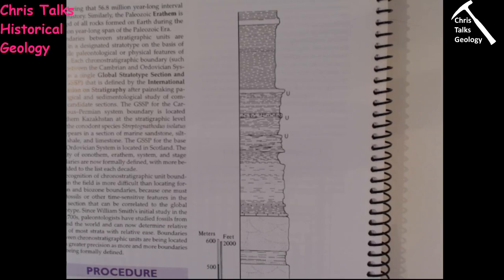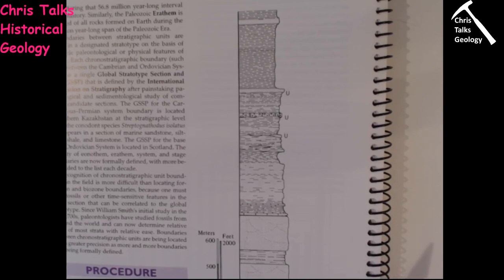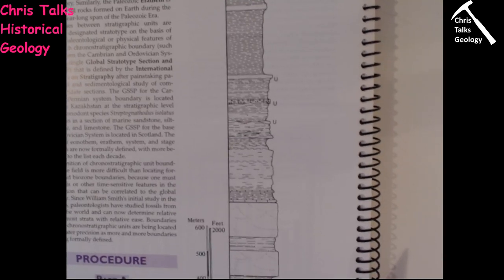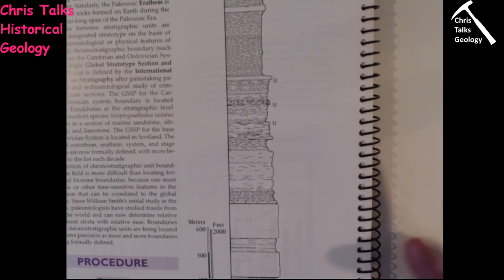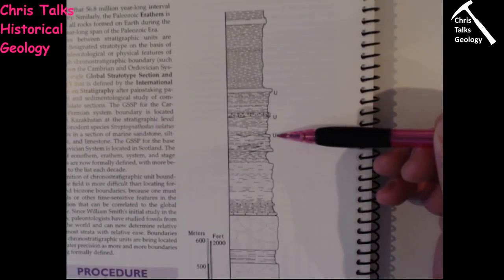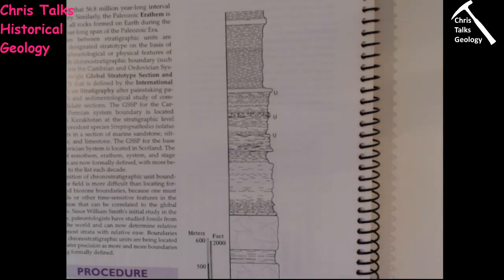If you walk up to a cliff face there can be dozens of rock units. What a geologist will do is try to split those rock units into groups called formations, rather than talking about two or three dozen rock units individually. We're going to look at this stratigraphic column and split it up into formations. You'll notice there are a few U's on the stratigraphic column — they represent unconformities, which are erosional surfaces.